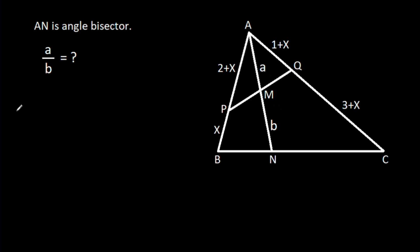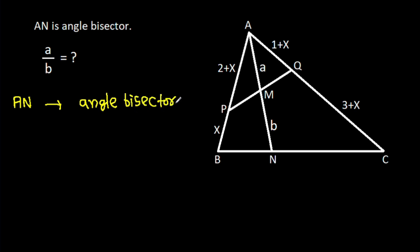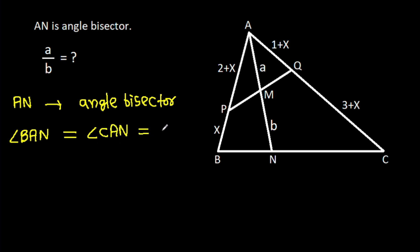So, AN is the angle bisector. That means angle BAN will be equal to angle CAN — suppose theta. These two angles will be equal, both theta.